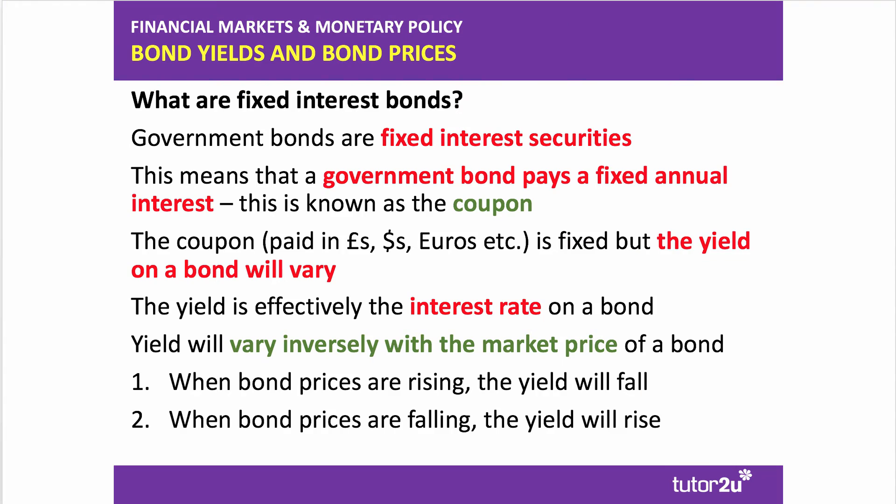This is a very important relationship that examiners test regularly. A government bond is a fixed interest bond — the government pays a fixed coupon per year to whoever holds the bond. The coupon is fixed, but the yield varies as it equals the coupon divided by the market price. When bond prices go up, the yield falls. When bond prices fall, the yield goes up. There is an inverse relationship between the two. The answer to question 3 was B.